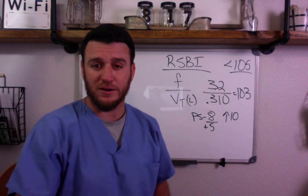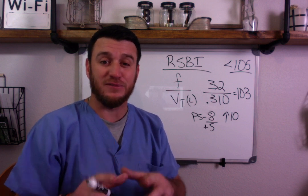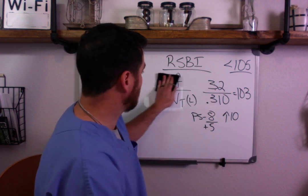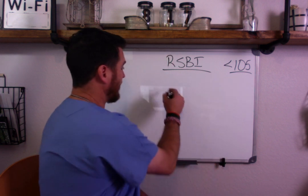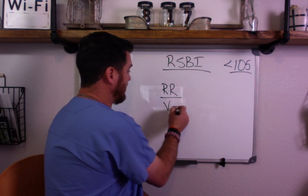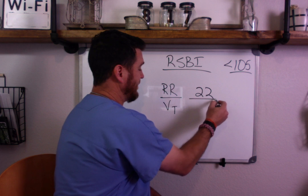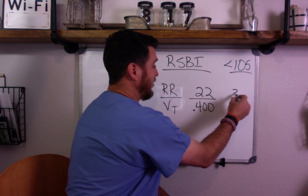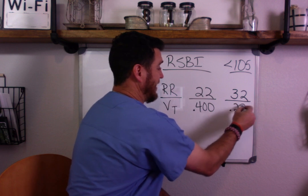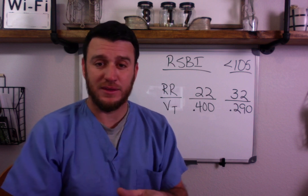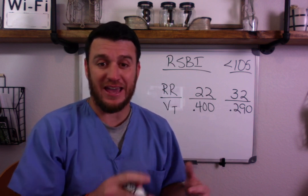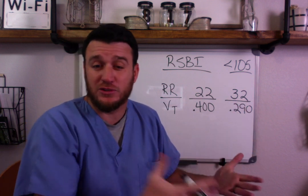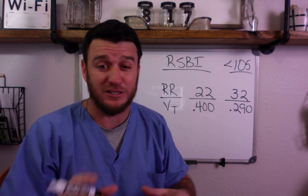Here's a trick that can make this very easy. If you need the exact number, you have to do the math. But let me give you two examples. Patient one is breathing 22 times a minute with a tidal volume of 400 mL. Patient two is breathing 32 times a minute with a tidal volume of 290 mL. Without doing any math, I can tell you which patient has an RSBI less than 100. The cutoff is 105, but really what's the difference between 100 and 105 — you're talking about a few mL difference.